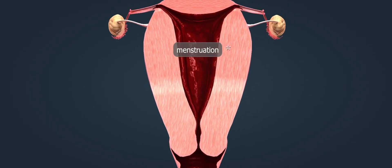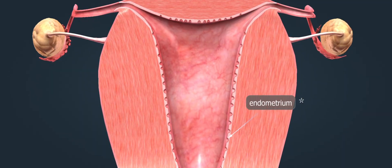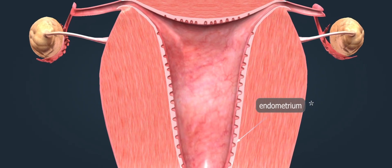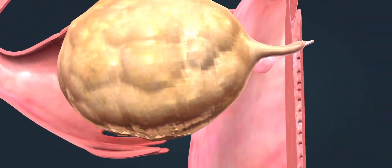After menstruation, the newly formed endometrium starts thickening. Right after menstruation, it is only about 0.5 millimeters thick, while on the 14th day of the cycle, during ovulation, it grows to about 3 to 5 millimeters.